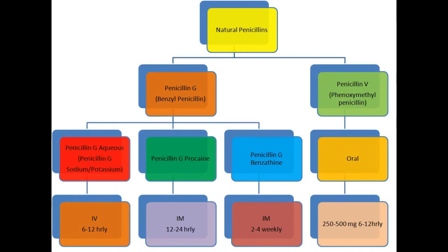Penicillin G, or benzylpenicillin, is available in three different preparations: aqueous, procaine, and benzathine. Aqueous penicillin G is available as penicillin G sodium or penicillin G potassium; it is given intravenously every 6 to 12 hours. Procaine penicillin G is longer acting than the aqueous form and is given intramuscularly every 12 to 24 hours. The longest acting preparation is benzathine penicillin G, given intramuscularly every 2 to 4 weeks.